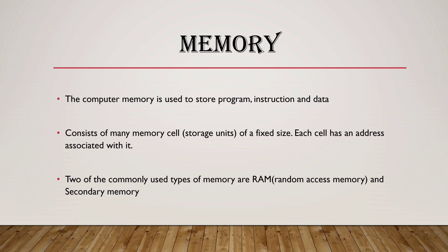Computer memory is used to store program instructions and data. It consists of many memory cells of fixed size, and each cell has an address associated with it. Two commonly used types of memory are RAM and secondary memory.